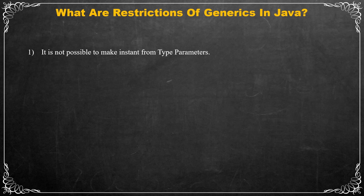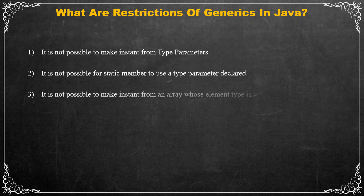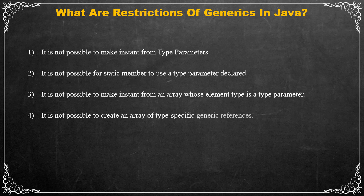The second restriction is that no static member can use a type parameter declared by the enclosing class. Also there are some restrictions with arrays: first, you cannot instantiate an array whose element type is a type parameter; second, you cannot create an array of a specific generic reference type.